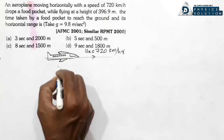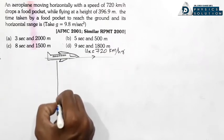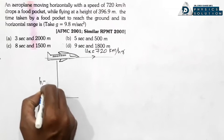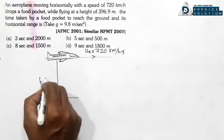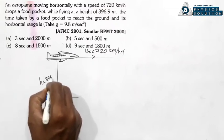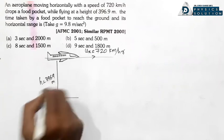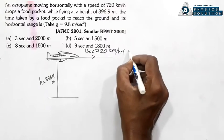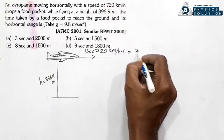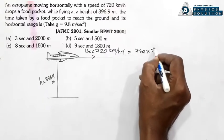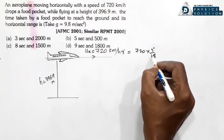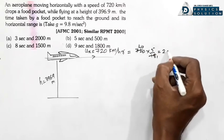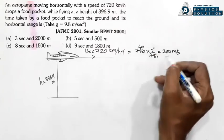Height diye hai: h = 396.9 metre. Lekin speed km/h mein hai, toh isko convert karna hoga: 720 × 5/18 = 200 metre per second.